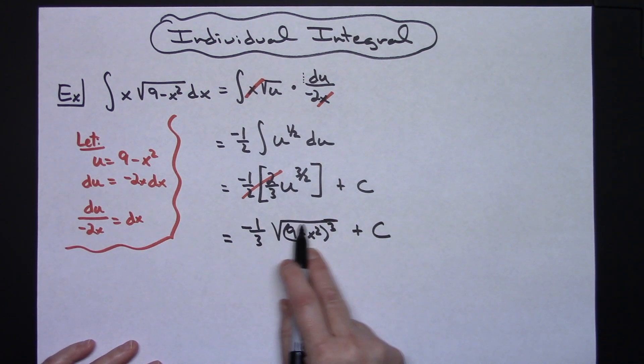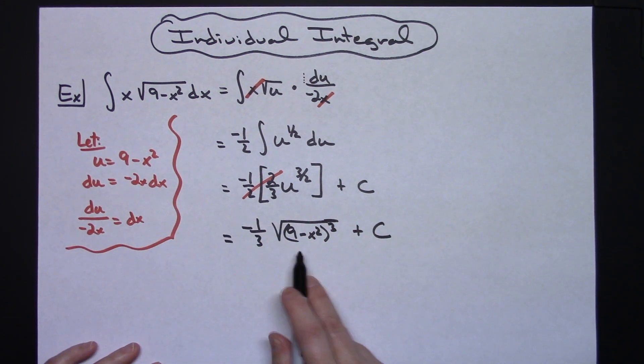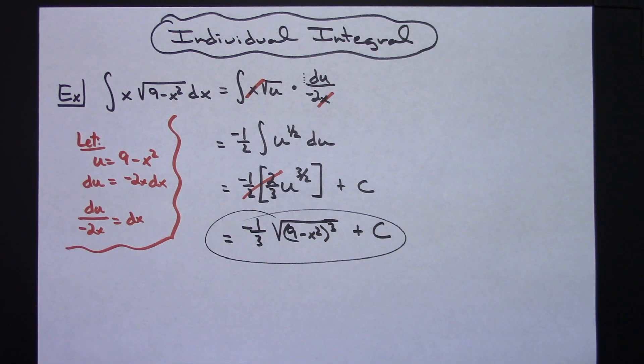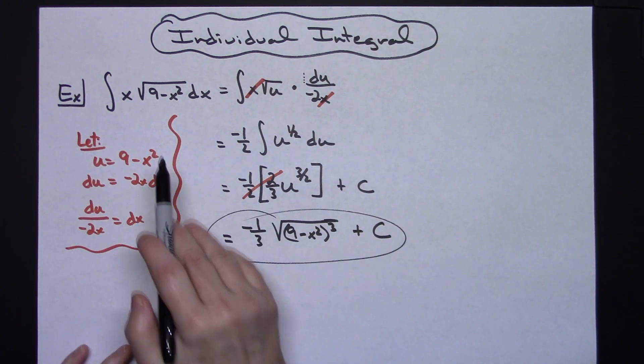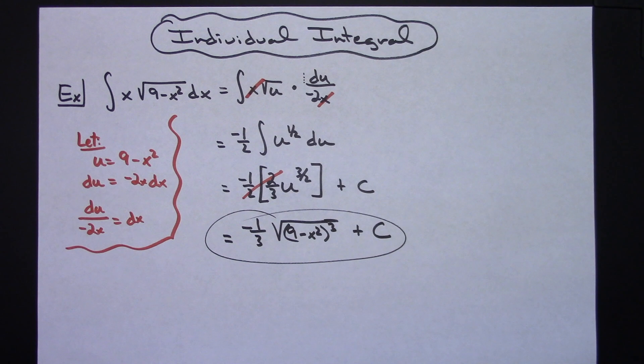So basically a straightforward u-substitution, picking that u being that inside function, and then crossing things out and simplifying all the way down to the end.